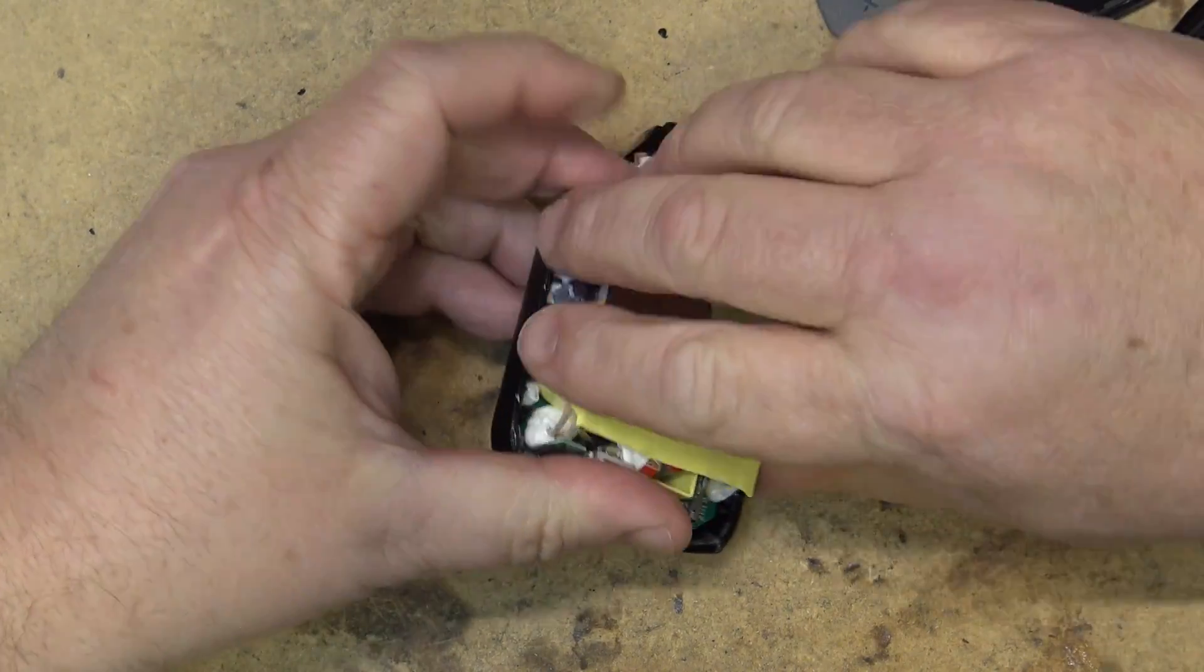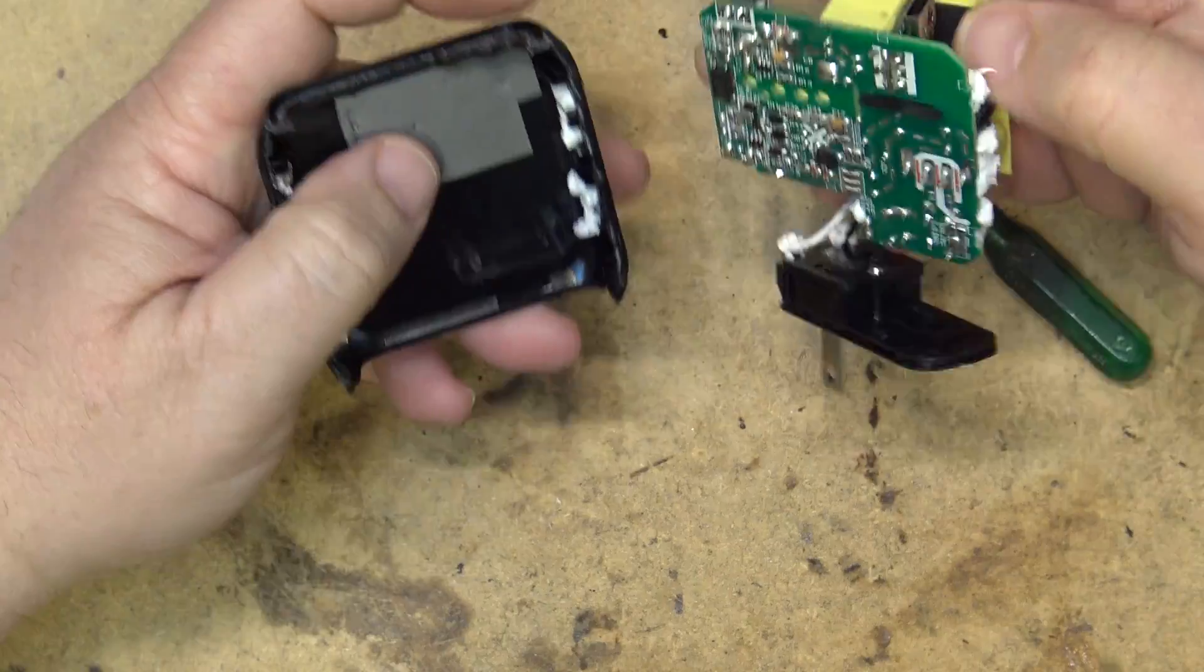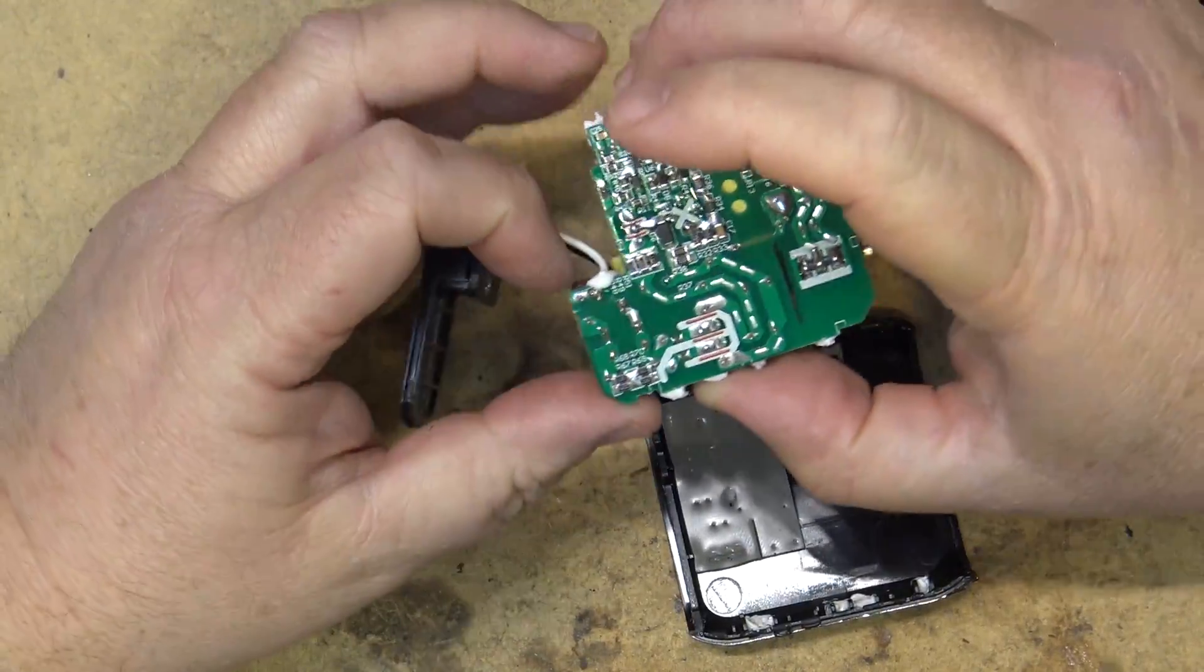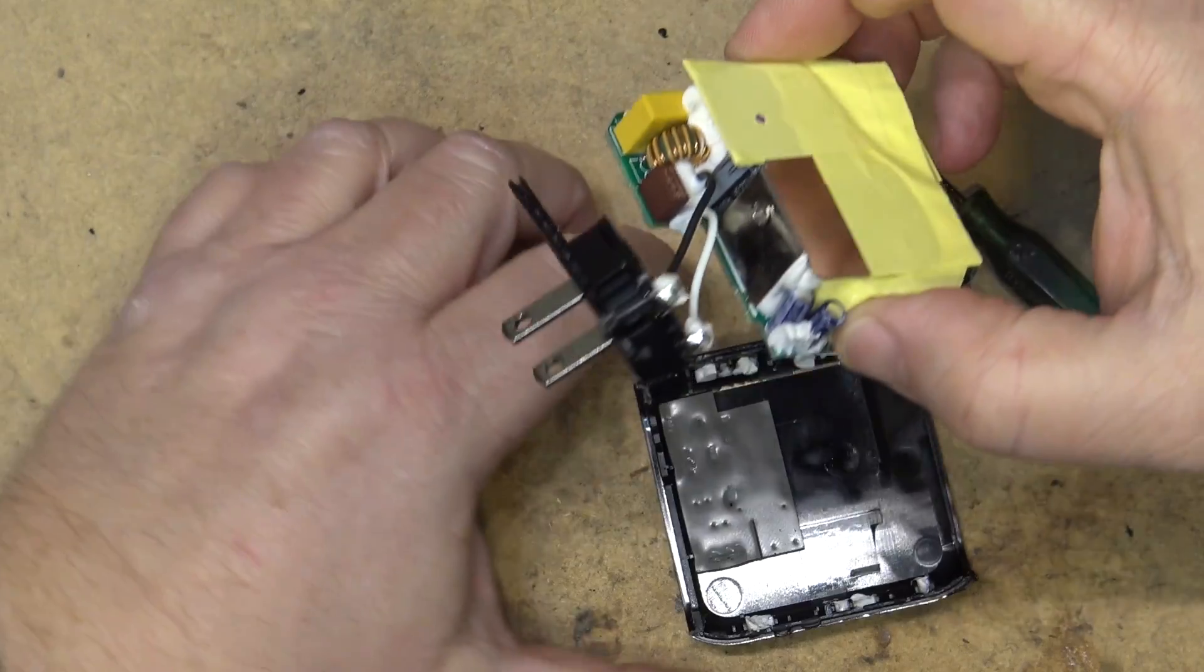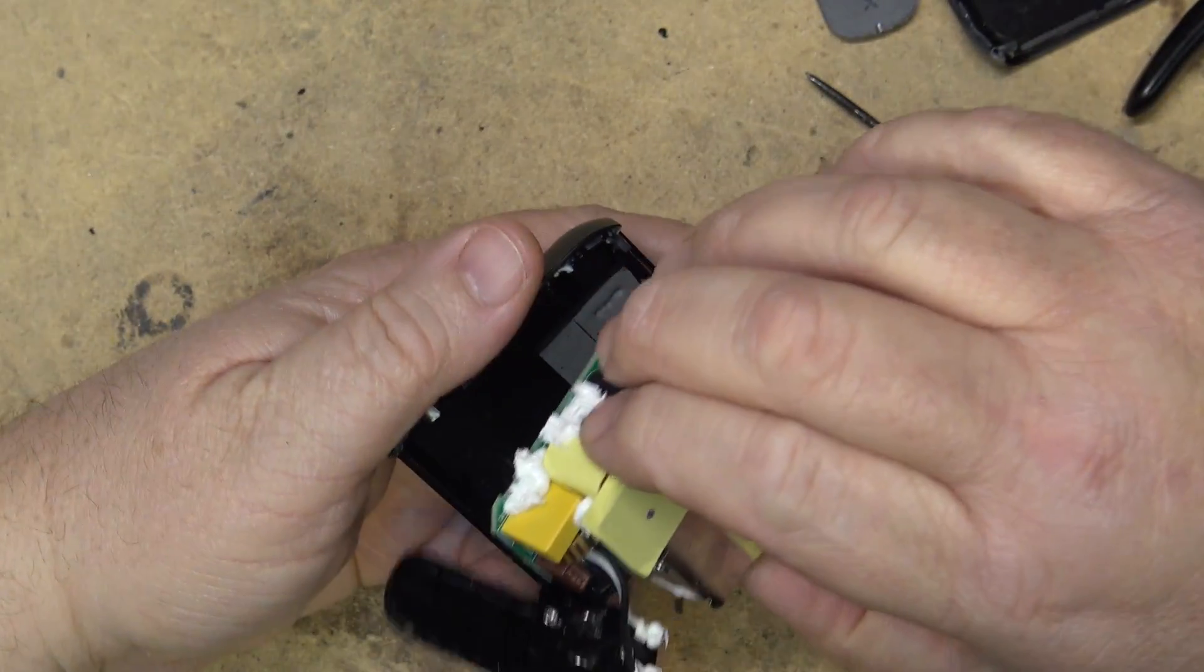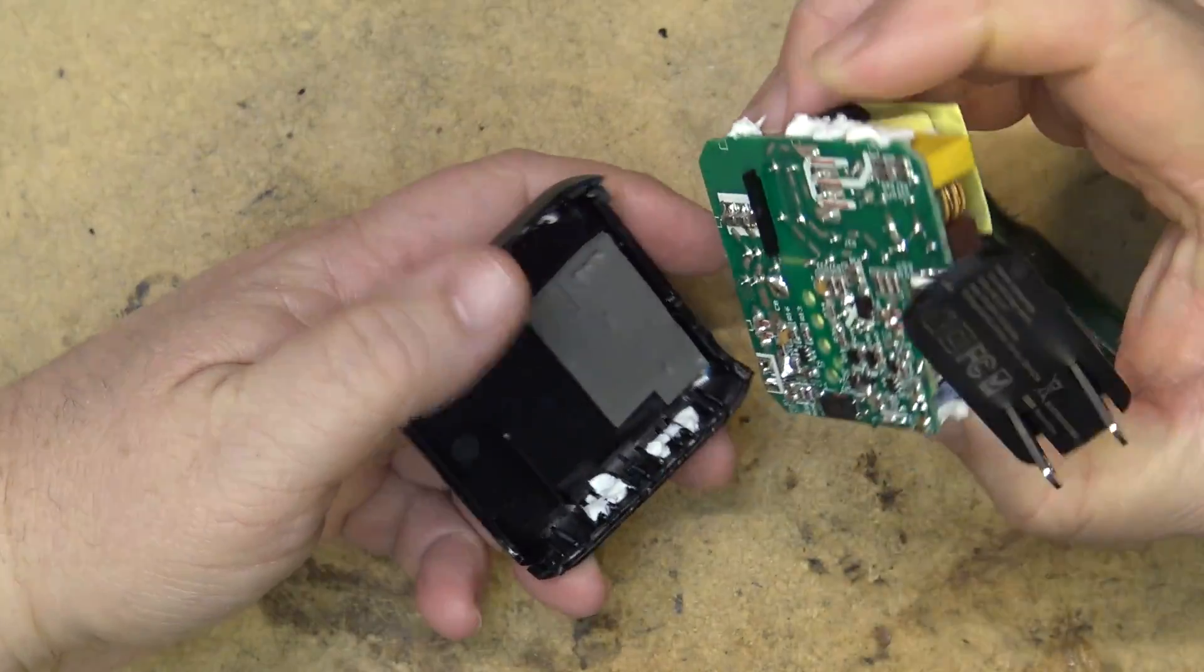We'll just pry this silicone out of the way, and we should be able to lift the circuit board out and look at the construction quality. So here's the base where it sat in here.